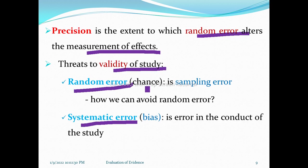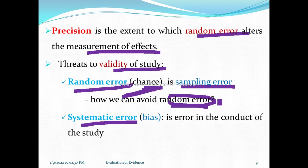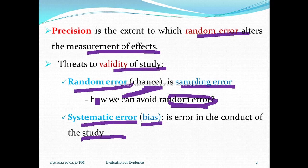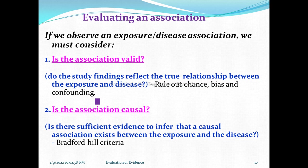Random error is a chance error known as sampling error. We can reduce random error by increasing the sample size. Systematic error, or bias, is an error in the design, conduct, or analysis of the study — any mistake or error in the study that is not due to chance.